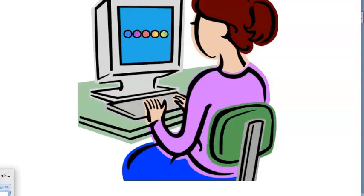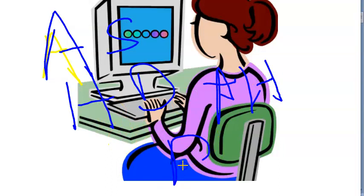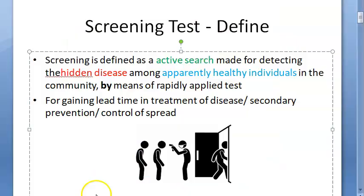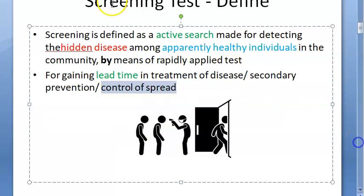So what is a screening test? It is the active search — you're actively searching for hidden disease in apparently healthy individuals by use of rapid tests — examinations, etc. — for gaining lead time in the treatment of the disease. You can do secondary prevention, that is early diagnosis and treatment. And you can also control the spread of diseases to others.